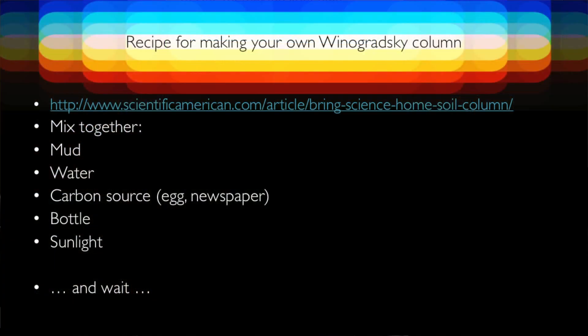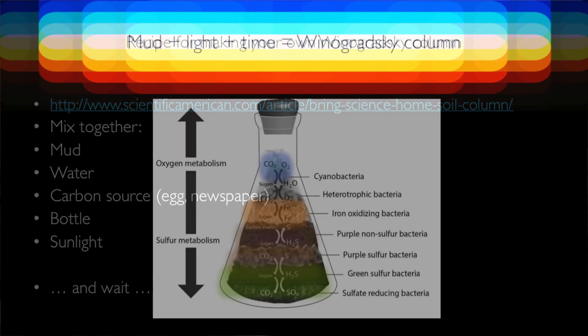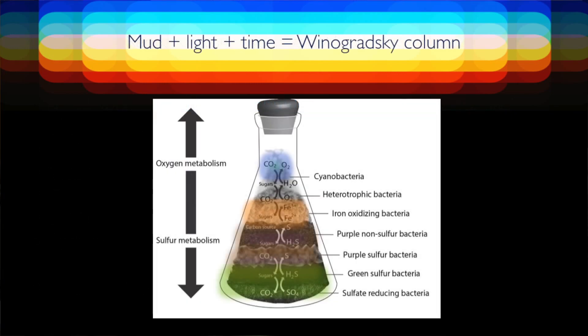And you can do this yourself. All it needs is mud and water and some kind of carbon source — you've got to give your little microbes food, the world's tiniest pets. You've got to give them some egg or newspaper or something to chew on. Put them in a bottle, seal it up, and don't forget: leave it out and put it in the sunlight because they need the sunlight energy. And then you wait. Mud plus light plus time will make these kinds of structures.